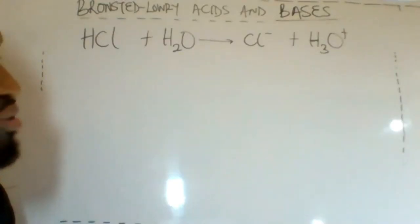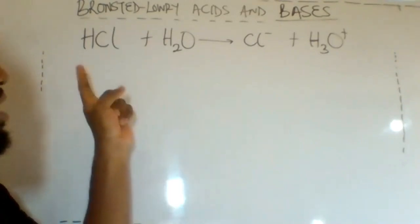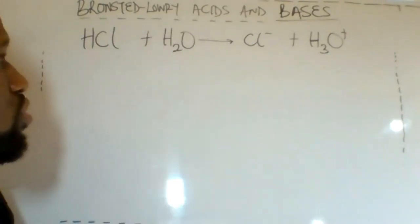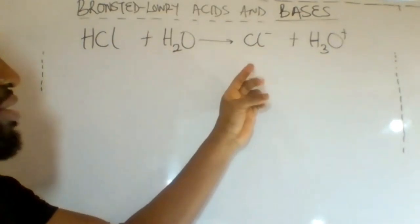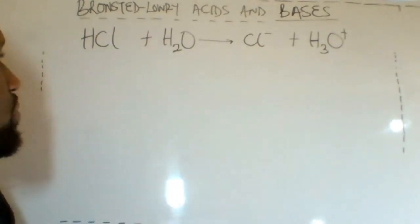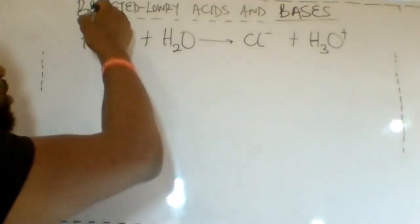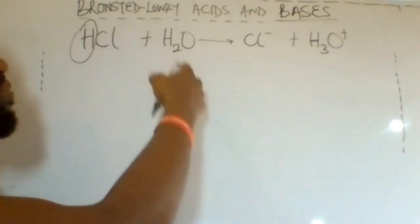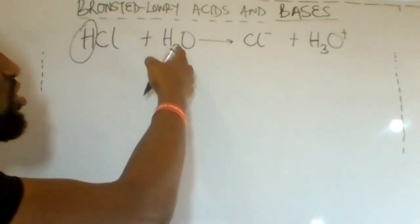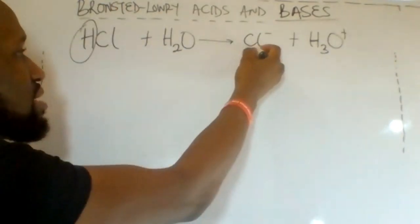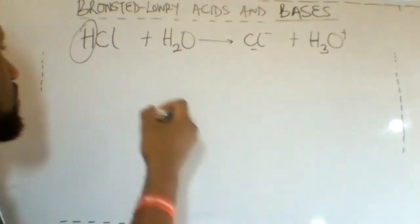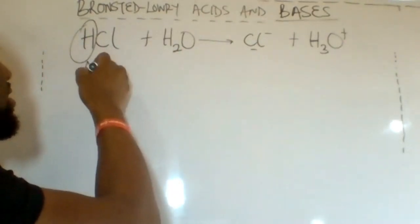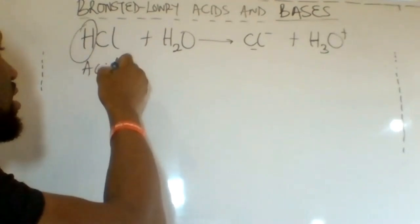For example, when HCl is dissolved in H₂O, the products are Cl⁻ and H₃O⁺. HCl contains the proton; if it donates the proton to H₂O, it becomes Cl⁻ and H₂O becomes H₃O⁺. Therefore, HCl is a Brønsted-Lowry acid.